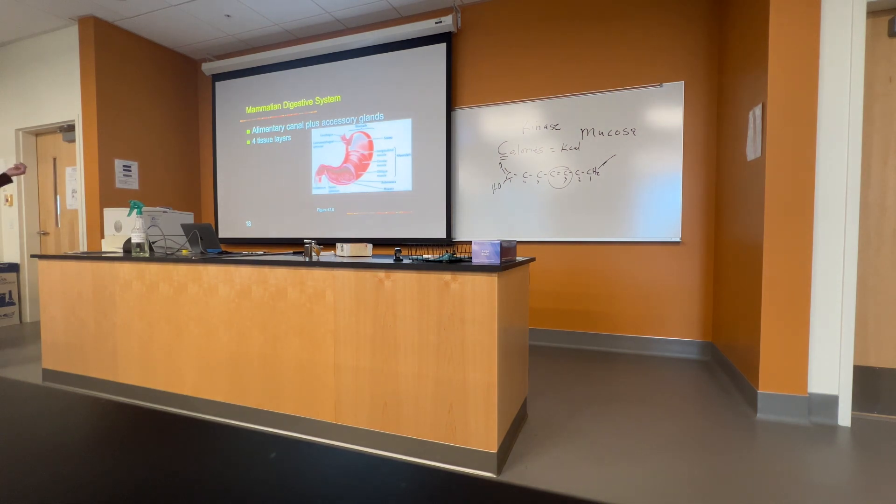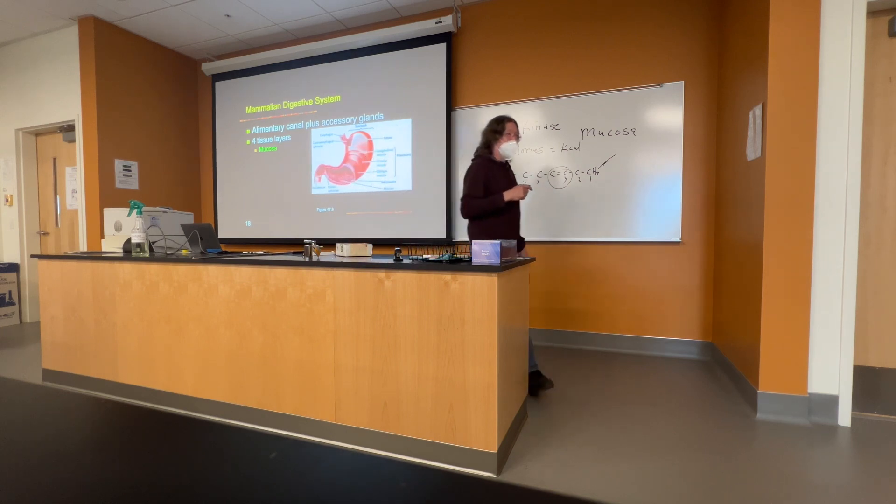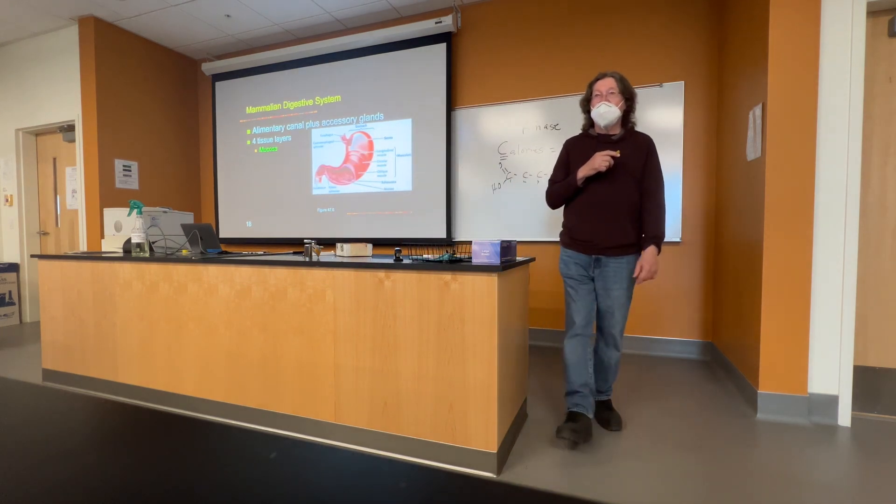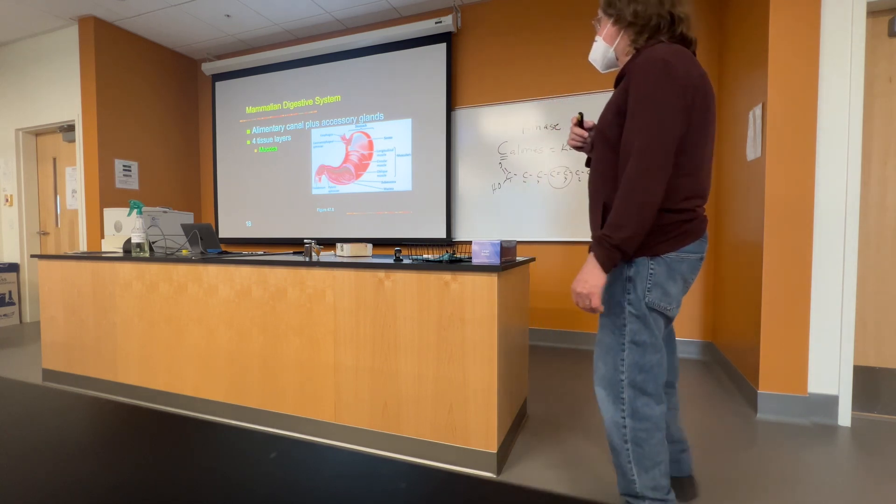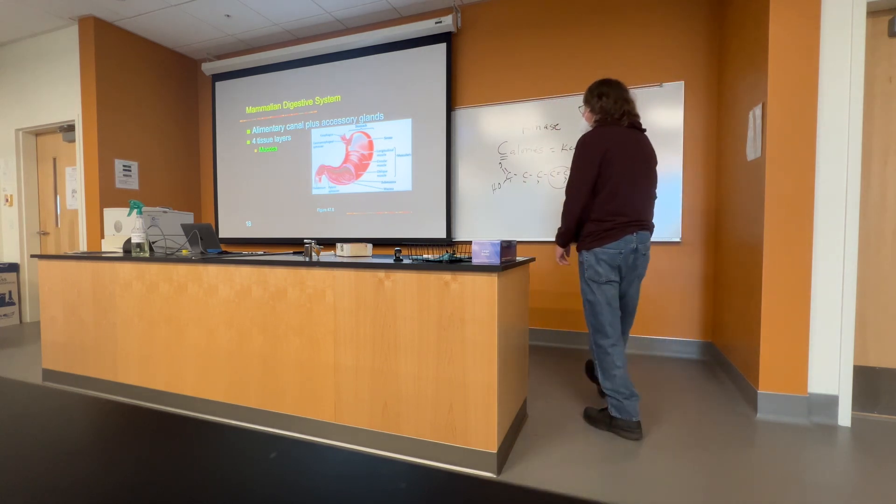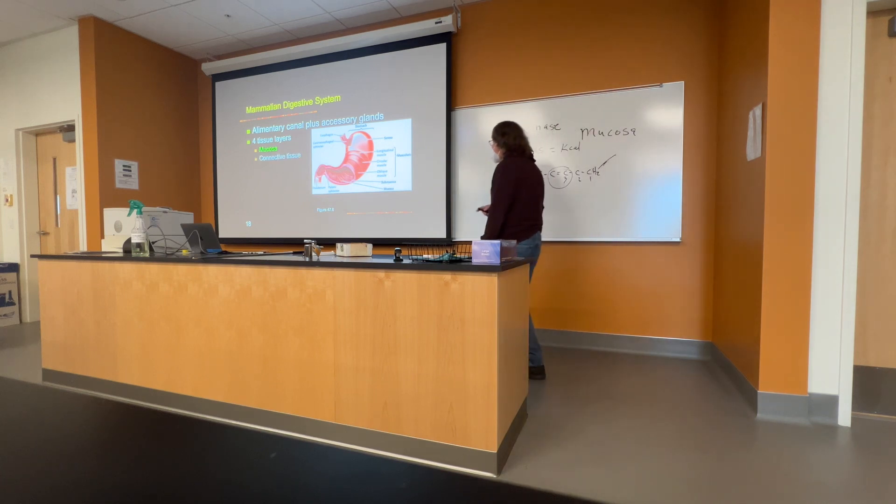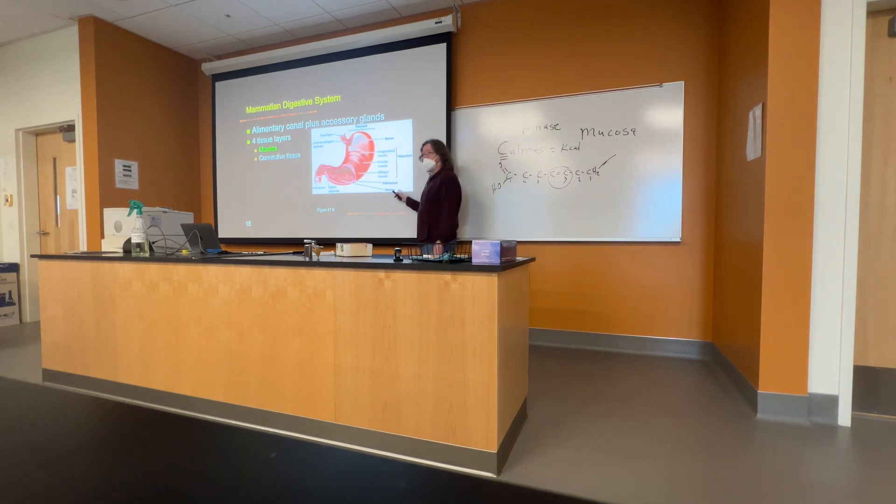Example here is the stomach and also in the small intestine. This inner layer which is usually a simple columnar epithelium. It's an epithelium. The face of the lumen of the digestive system is called the mucosa. Underneath it is a connective tissue that is called the submucosa.